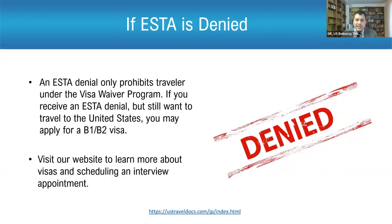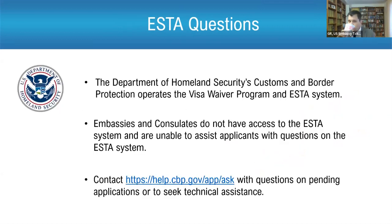If your ESTA is denied, that doesn't mean you can never go to the United States — it just means you can't use the visa waiver program. Instead, come to the embassy or one of our consulates and apply for a visitor B visa as a tourist. ESTA and the visa waiver program are run by the Department of Homeland Security, specifically Customs and Border Protection. The embassies and consulates have limited access to ESTA information, but here is the URL you can go to for questions about the visa waiver program and ESTA.